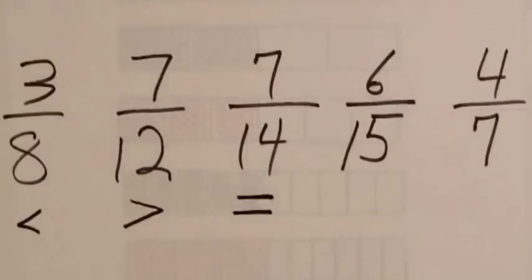One activity that you can do with students is to put up a list of fractions, flash fractions at them and they either give thumbs up or thumbs down. Thumbs up if it's greater than a half, thumbs down if it's less than a half.